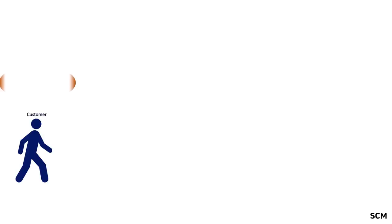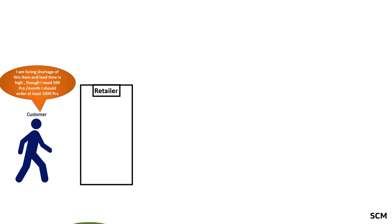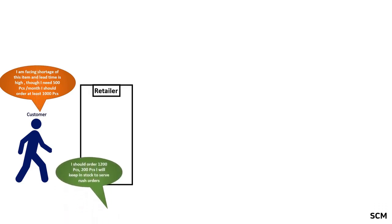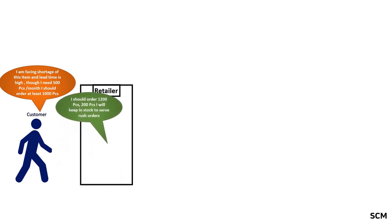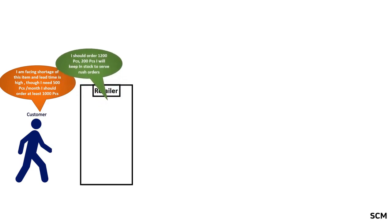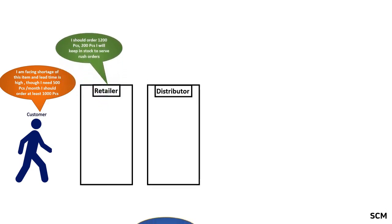Here is an example of how the bullwhip effect is created. A customer is facing a shortage of a particular item and lead time is high. Though he needs 500 pieces per month, he forecasts to the retailer that he needs at least 1,000 pieces. Based on this customer input, the retailer plans for 1,200 pieces per month and plans to keep 200 pieces in stock to avoid shortages.